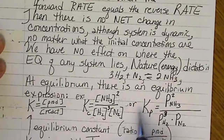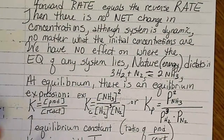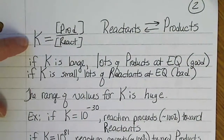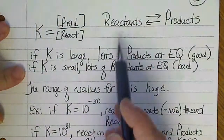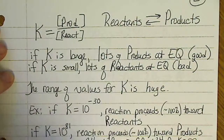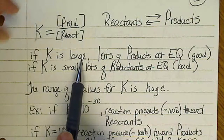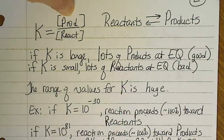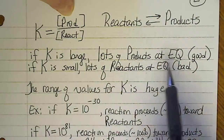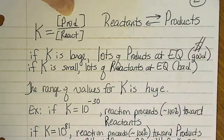Being able to take any reaction and write an equilibrium expression is important for the math we'll be doing. The value of K can tell us something about the reaction. Since products are in the numerator and reactants in the denominator, a large value for K means we have a lot of products — and for chemists, that's good because that means we're going to make money.